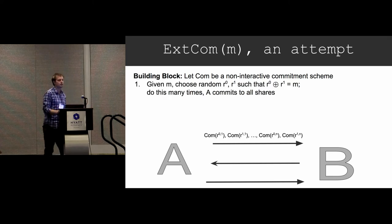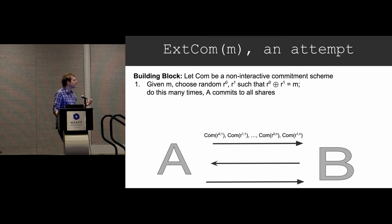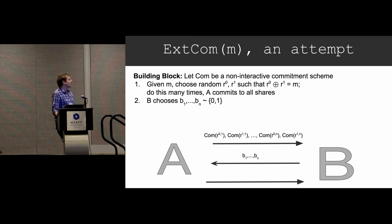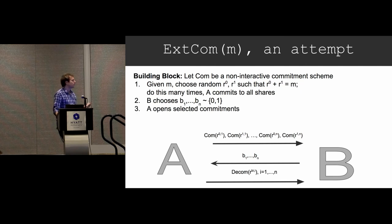We have some M we're going to commit to. Let's break it into shares R0 and R1 — they're secret shares, so they XOR to M but otherwise they're random. Let's do this many times, getting N copies of two shares: R01, R11, all the way through R0N and R1N, and commit to all of them. Then Bob is going to select one share from each pair, and we'll open the corresponding share. That's our commitment scheme.